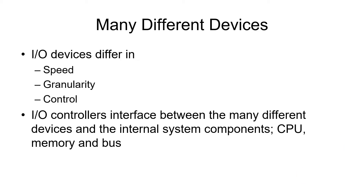The devices differ in several different qualities. They have different speeds, as mentioned. Granularity is the size of the unit that you can read and write — keyboards can type individual characters, while disk drives generally read and write blocks of maybe 4,000 bytes. There's also a difference in how you control the devices.